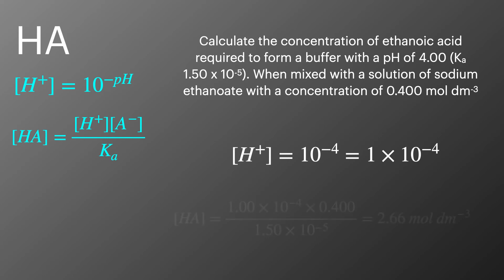And then we'll put that number along with the value for A minus from the question into the rearranged Ka expression. This gives us the concentration of HA to be 2.66 moles per decimetre cubed.